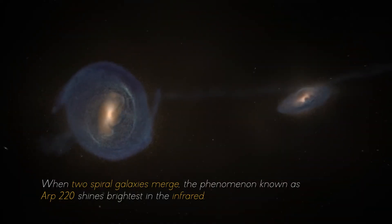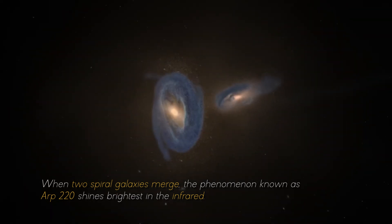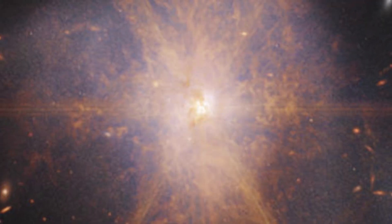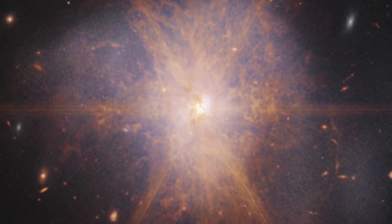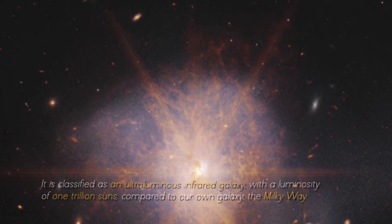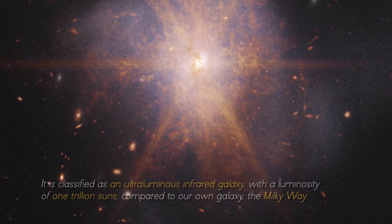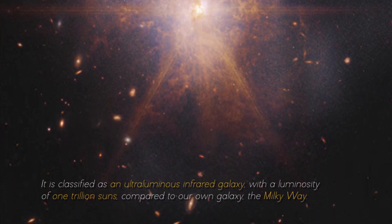When two spiral galaxies merge, the phenomenon known as ARP 220 shines the brightest in the infrared, making it perfect for observation by the James Webb Space Telescope. It is classified as an ultra-luminous infrared galaxy, with a luminosity of 1 trillion suns compared to our own galaxy, the Milky Way, which has a much lower luminosity of about 10 billion suns.